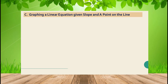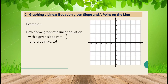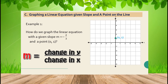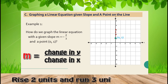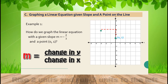Next, graphing a linear equation given slope and a point on the line. How do we graph with slope -2/3 and point (0, 1)? First locate the given point (0, 1). Then recall that slope is the change in y over the change in x. Since the change in y is 2, rise 2 units. Since the slope is negative, run 3 units to the left to find the second point. Connect the two points — that is the line from the given linear equation.